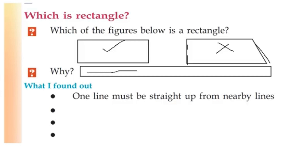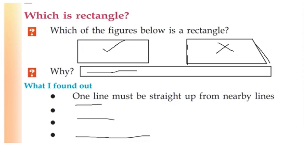One line must be straight from nearby lines. This is four sides. This is four corners. This is opposite sides equal. This is a rectangle. This is a rectangle — one line must be turned, so it is not the right one.